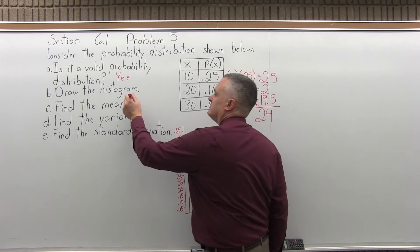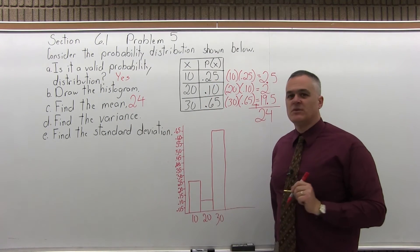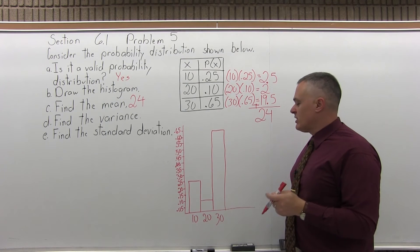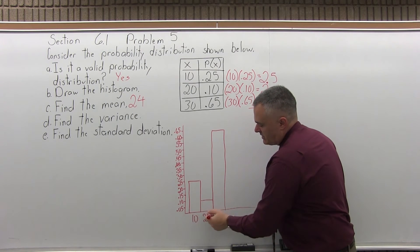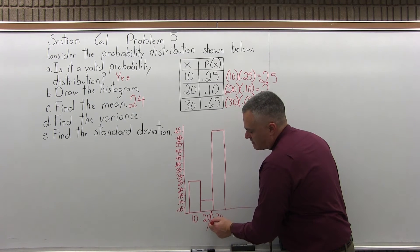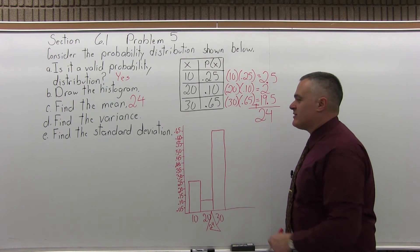So that's the mean. The mean is 24. And as a rule of thumb, the histogram, if you cut it out of wood, should balance right over what that mean is. So the midway point between 20 and 30 is 25, 24. That looks about right. And you don't have to do that. That's just an extra bit of information.